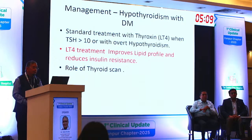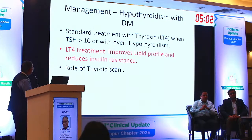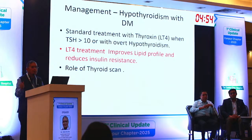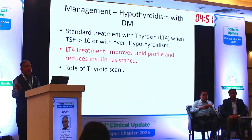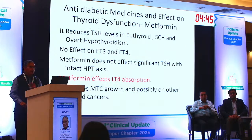For hypothyroidism: if subclinical hypothyroidism TSH is more than 10, it should be treated. T4 treatment improves lipid profile and reduces insulin resistance. However, there is no role of nuclear scan or any type of scan in hypothyroidism — please do not advise any nuclear scan if there is hypothyroidism.